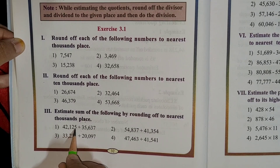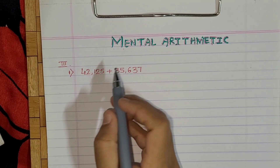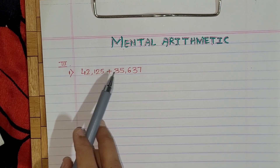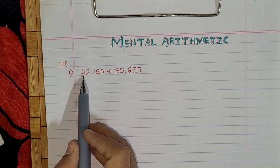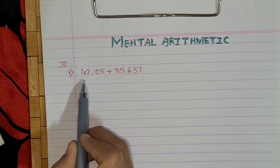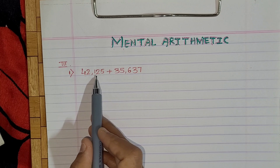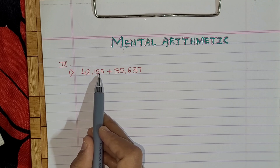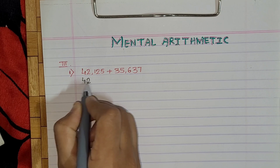So let's take this first example: 42,125 plus 35,637. I will write the same example here. What we will do first? We will round off to the nearest thousands place. For the first number, 42,125 — if the digit at the hundreds place is 1, 2, 3, or 4, replace the units, tens, and hundreds by 0. Here at the hundreds place we are having 1, so we replace and keep the thousands place as it is. So we write 42,000.